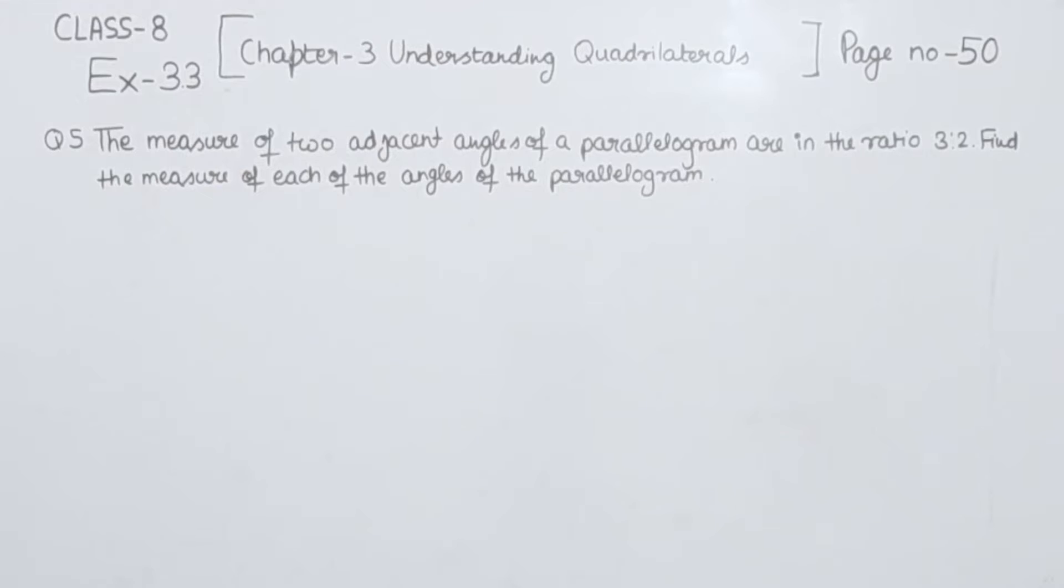The measure of two adjacent angles of a parallelogram are in the ratio 3 is to 2. Find the measure of each of the angles of the parallelogram.